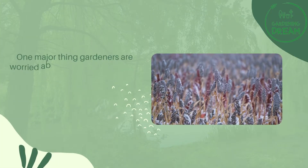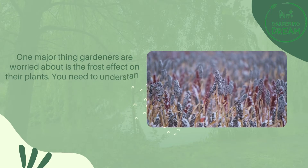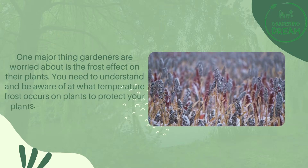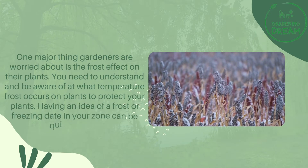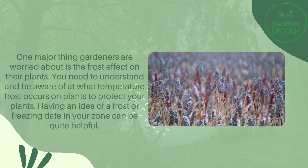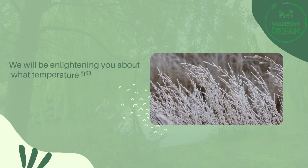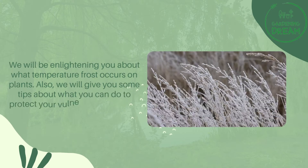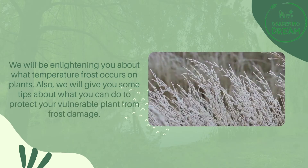One major thing gardeners are worried about is the frost effect on their plants. You need to understand and be aware of at what temperature frost occurs on plants to protect them. Having an idea of a frost or freezing date in your zone can be quite helpful. We will be enlightening you about what temperature frost occurs on plants, and also give you some tips about what you can do to protect your vulnerable plants from frost damage.